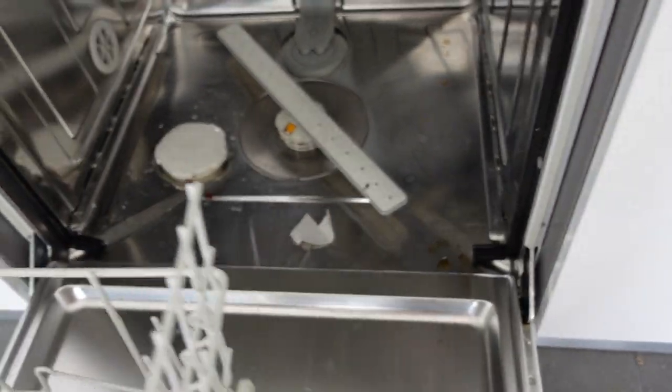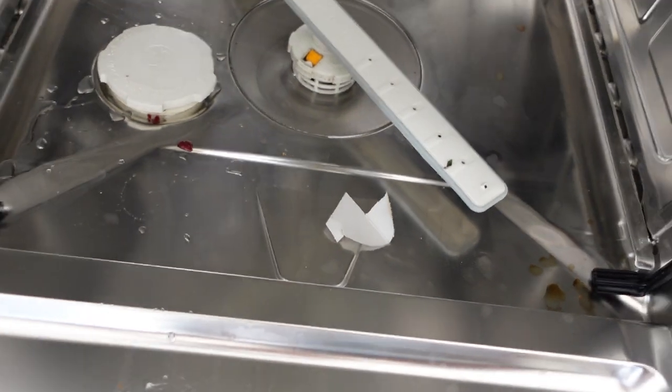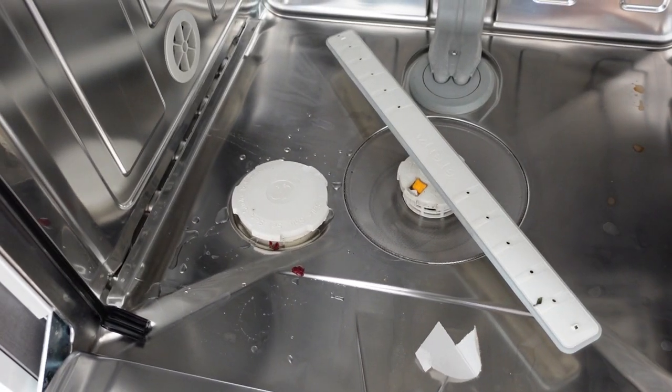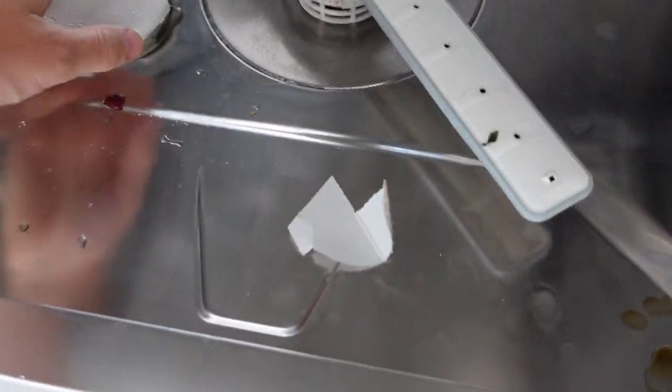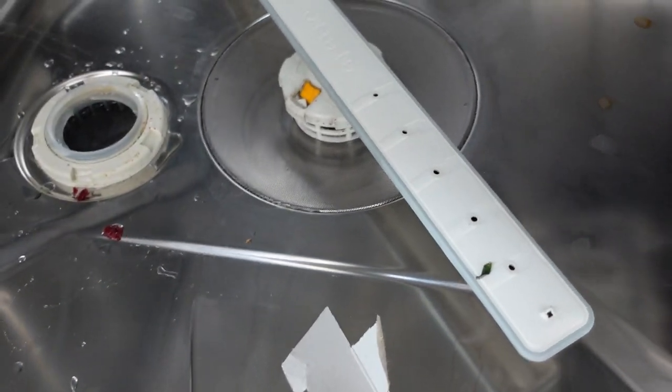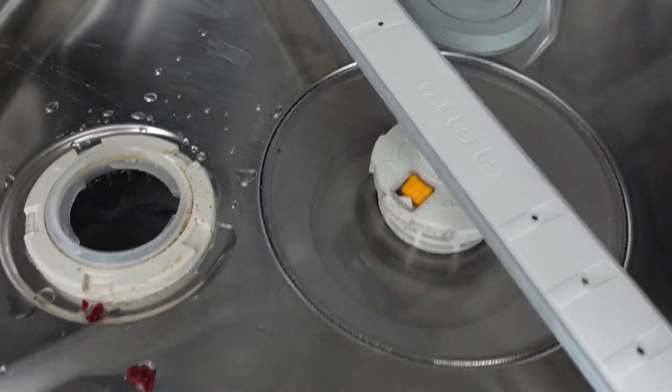So you just open your dishwasher, take out the bottom tray, and then you can see right here on the left side you have this lid here. Pop that off, and you're going to put your salt in there.